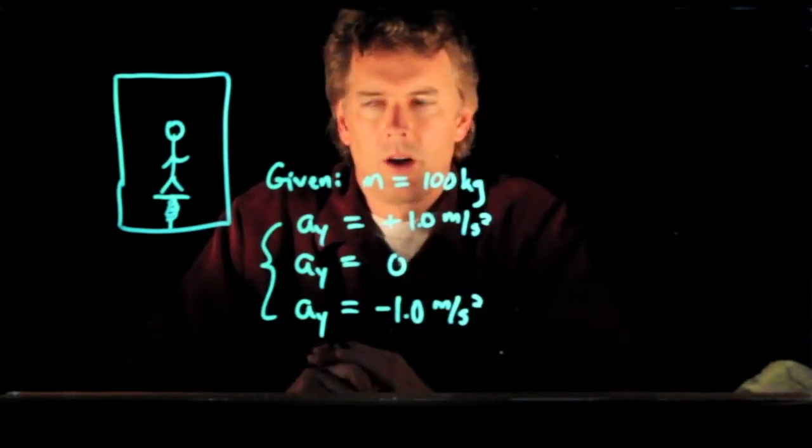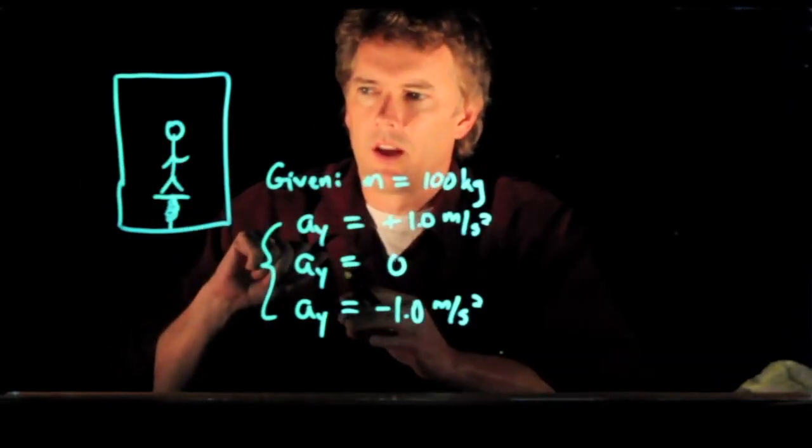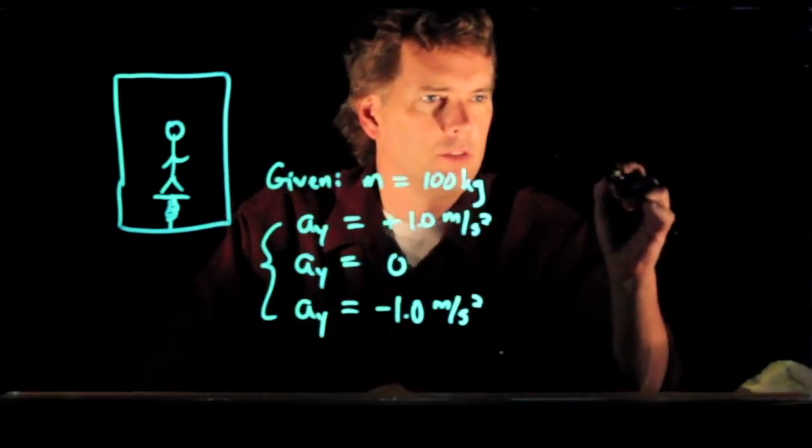How do we do that? First we draw a picture. We got the picture. Second, we draw a free body diagram and write down all our givens. We have the givens.